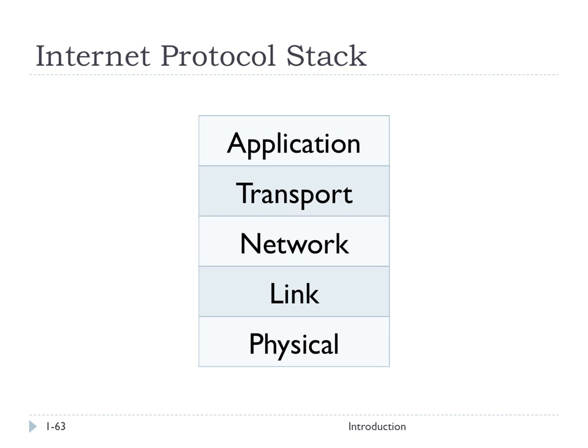A brief overview of each layer: the application layer is about supporting and implementing network applications. Common examples include HTTP for the web, SMTP for email, and FTP for file transfer. Going down a level, the transport layer provides process-to-process data transfer — getting data from a process on one computer to a process on a different computer. The two big protocols here are TCP and UDP.